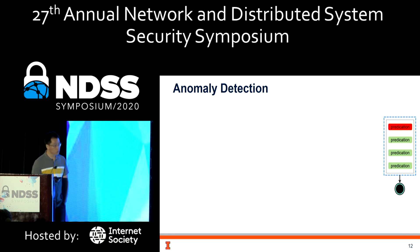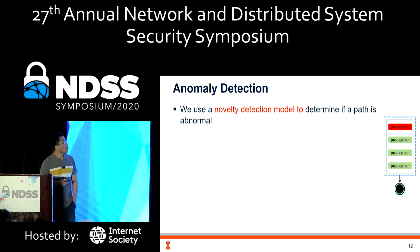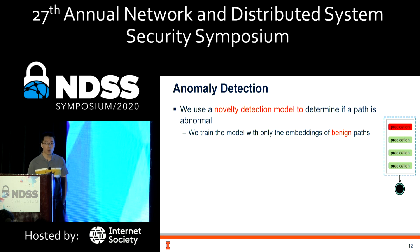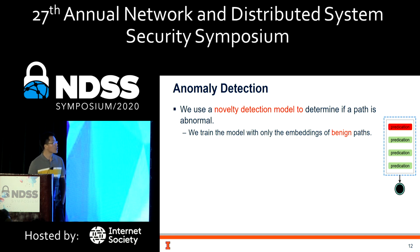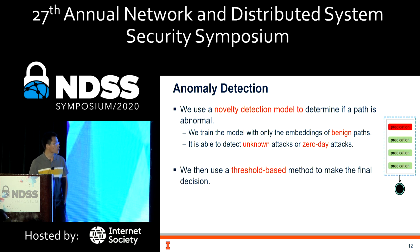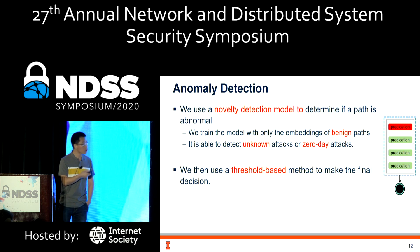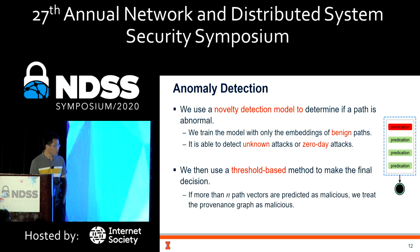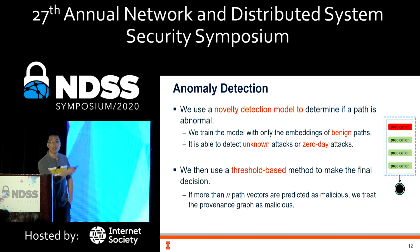For the anomaly detection stage, we use a novelty detection model to determine if a path is malicious or not. We train the model using only the benign paths and their embeddings, so it will be able to detect unknown or new attacks. Because we want to know whether the process is malicious, we use a threshold-based method: if more than h path vectors are predicted as malicious, we consider the graph malicious.